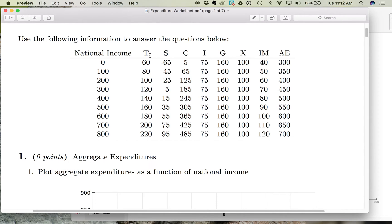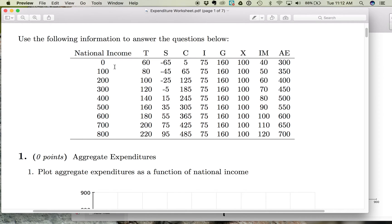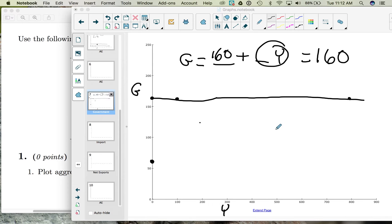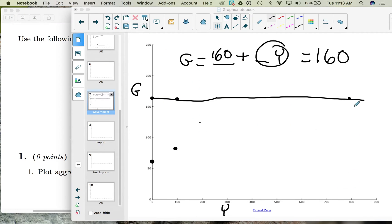So let's also look at this column here on net taxes. So notice that when national income is zero, net taxes are 60. When income is 100, net taxes are 80. And we can keep plotting these net taxes all the way until national income is 800 and net taxes are 220.